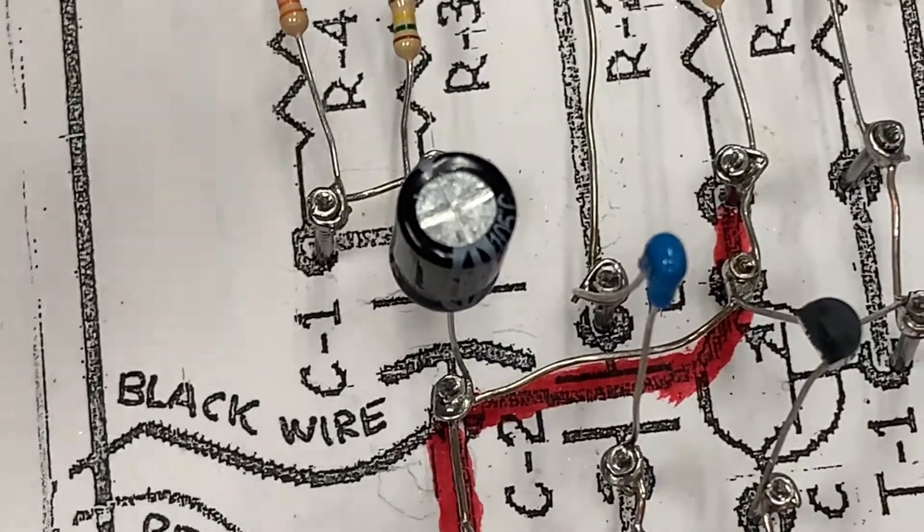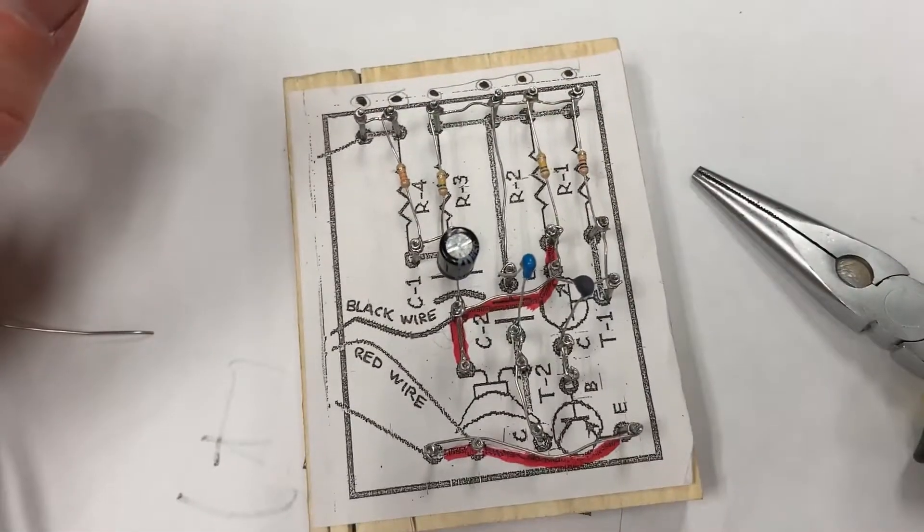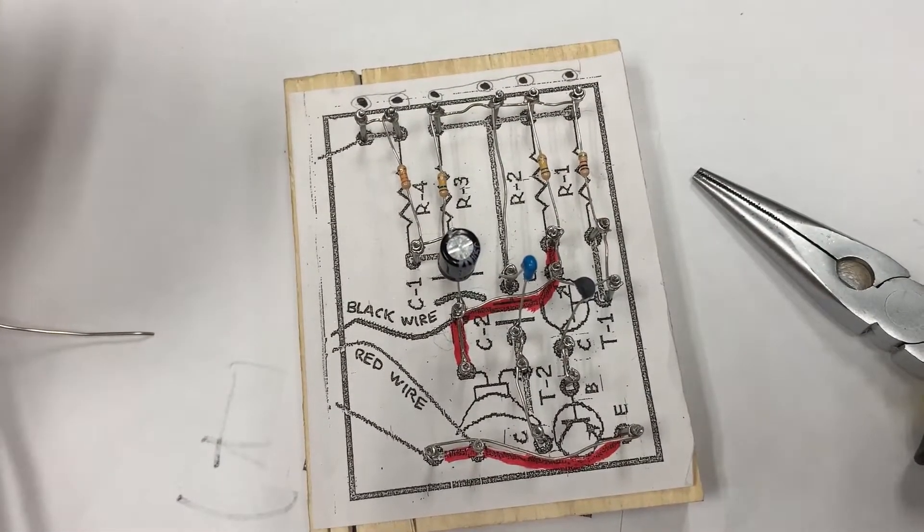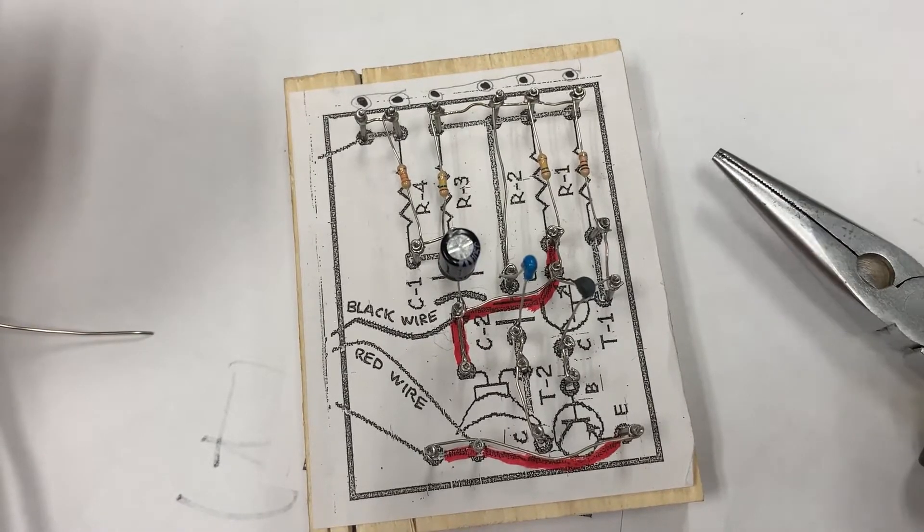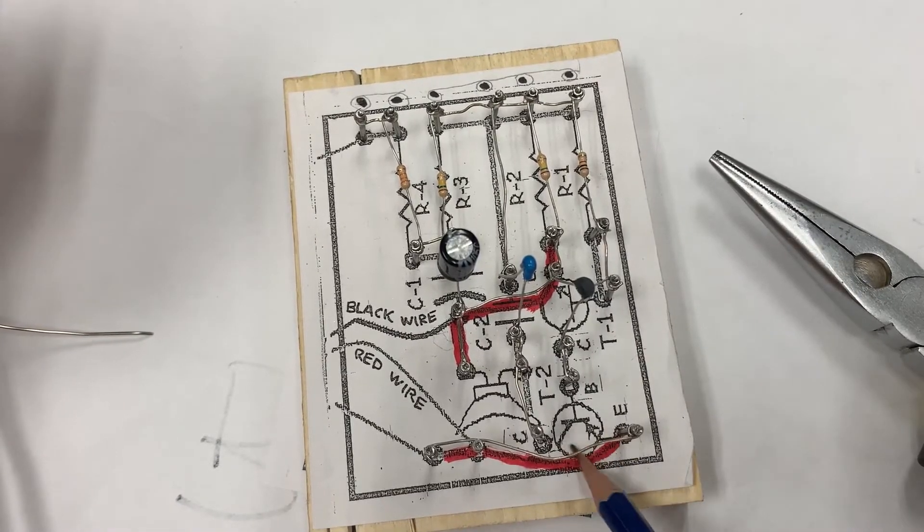After I've soldered this one in place, I would then repeat the process and get my transistor number two located in this location.